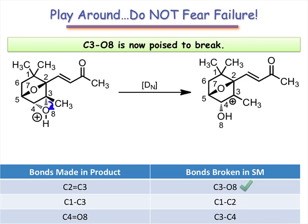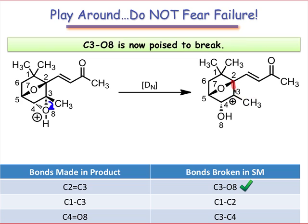Breaking a bond directly attached to a carbocation is unlikely, but we can accomplish the required formation of the C1C3 bond in the next step. Pause the video now and see if you can spot the correct elementary step to accomplish this.